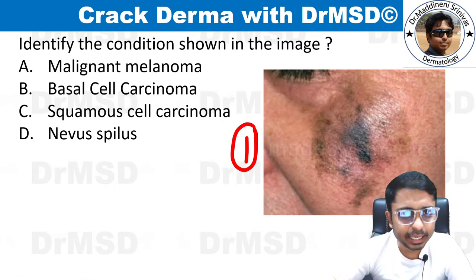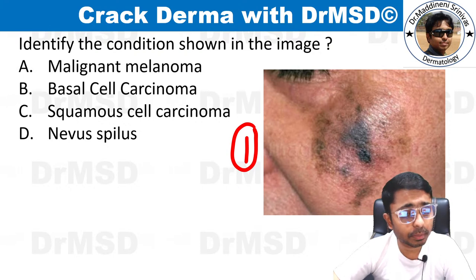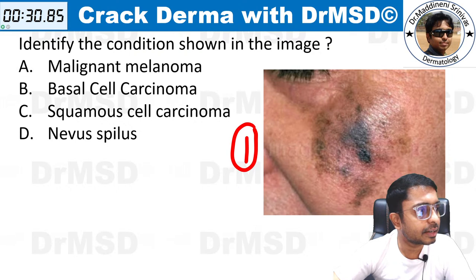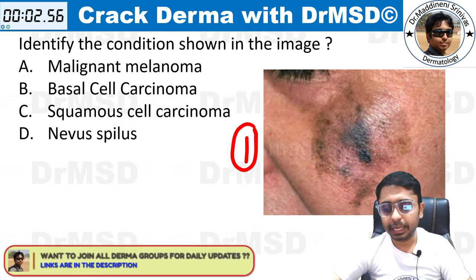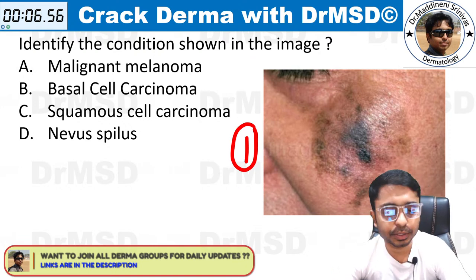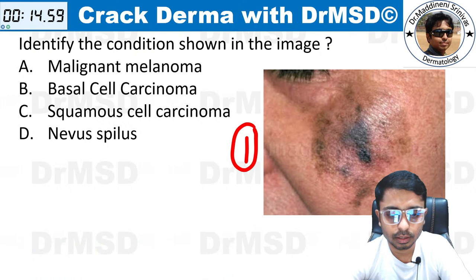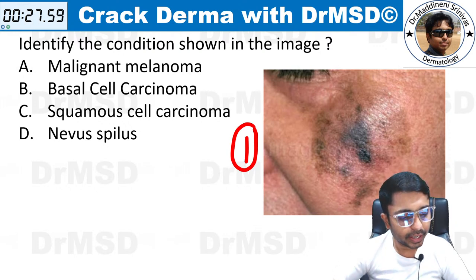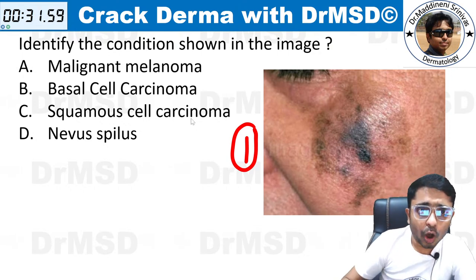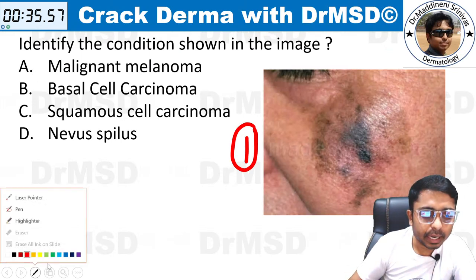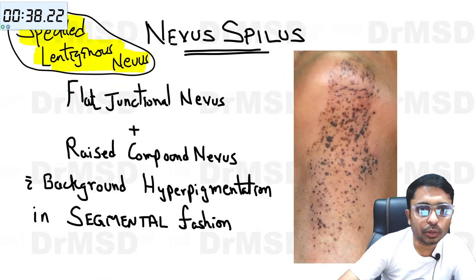Let us start the questions very quickly. Type in the chat section: question number one, followed by whatever answer you feel is correct. We have a timer here for 30 seconds. Yes, very good — Lavanya, you are right. The answer is option A, that is malignant melanoma. It is indeed malignant melanoma.